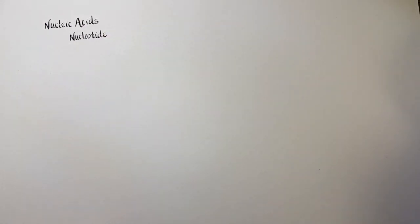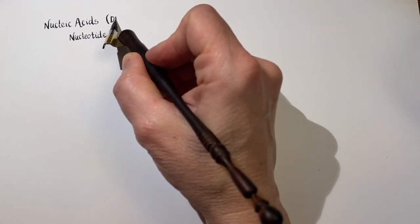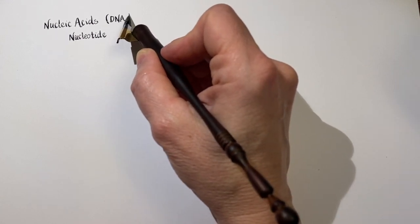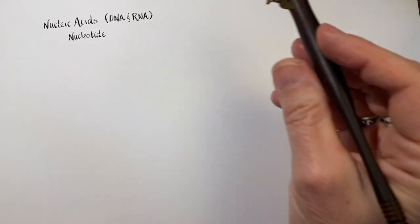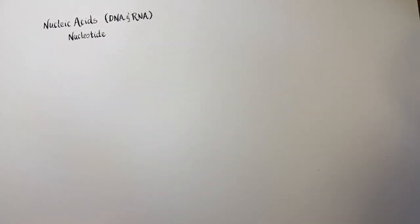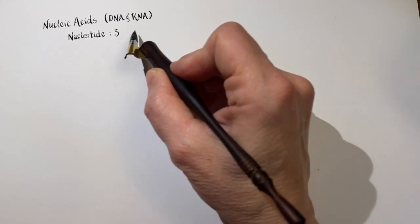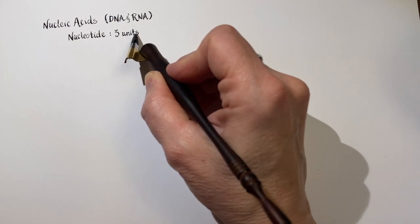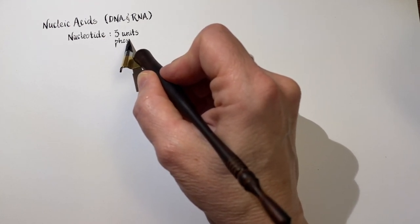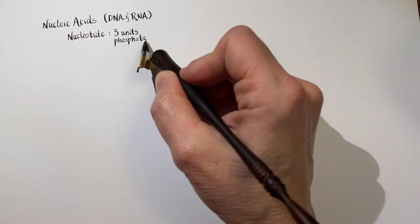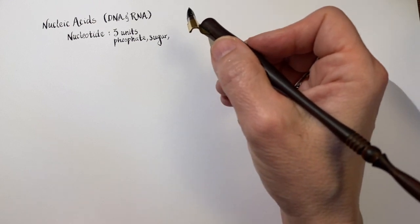I'll put both DNA and RNA and we will talk about the difference between the two in terms of their structures. So a nucleotide is made up of three units, and those are specifically phosphate, a sugar, and a nitrogen base.